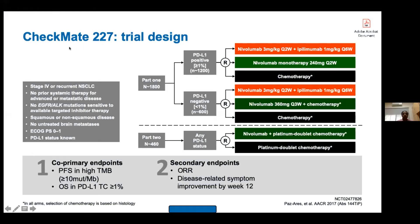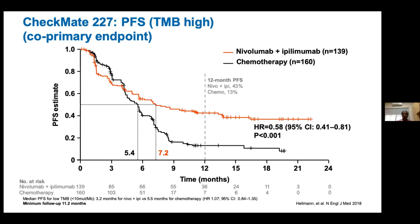Checkmate studies involve nivolumab. Checkmate-227 is a very important study because it uses a combination of immunotherapies: platinum doublets, nivolumab, and ipilimumab together. Nivolumab blocks the PD-L1 pathway whereas ipilimumab blocks the CTLA-4 pathway, so this is an example of combining two immunotherapy drugs. This study used tumor mutation burden (TMB) as a biomarker.